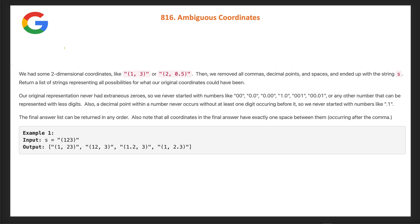We have two-dimensional coordinates like (1,3) or (2, 0.5). We remove all commas, decimal points, and spaces, ending up with a string S. We then return a list of strings representing all possibilities for what the original coordinates could have been, by placing commas, spaces, and dots in suitable positions.